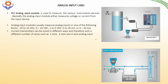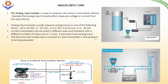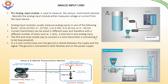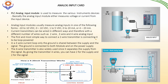Current transmitters can be wired in different ways with different numbers of wires: 2 wires, 3 wires, and 4 wires. The simplest way is 2-wire, connected as a loop-powered device. In a 3-wire current loop, only the ground is shared between the power supply and the signal — the ground is connected to both modules on the power supply. The 4-wire transmitter is widely used to separate the power supply and the signal: 2 wires for power supply and 2 wires for signal.